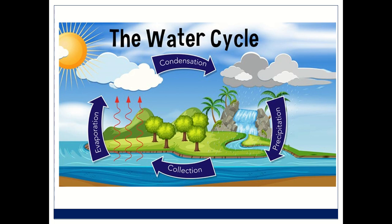As we move away from the surface of the earth, the air becomes cooler. Hence, when water vapour reaches higher levels, it condenses due to contact with cool air and forms small drops or water droplets. These tiny droplets form into clouds, and when clouds become bigger and can no longer hold the water drops, they fall down as rain.